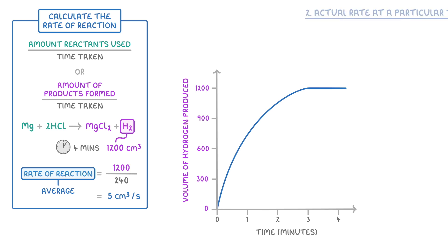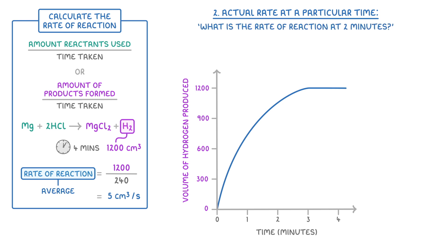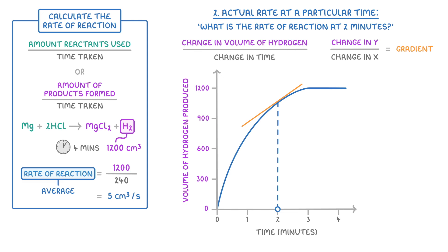The other thing you could be asked is to calculate the actual rate at a particular time. For example, what is the rate of reaction at 2 minutes? To do this, we need to calculate the gradient of the curve at that particular point. So the first step is still to find 2 minutes on the x-axis and trace up to find where it intersects our curve. But then instead of drawing a line across to the y-axis like we did before, we instead draw a tangent to the curve at that point. And remember, a tangent is just a straight line that just touches the curve and has the same gradient as the curve does at that point. Once we have our tangent drawn, we need to find the gradient of the line, which is equal to the change in y divided by the change in x — which in our case would be the change in the volume of hydrogen divided by the change in time.